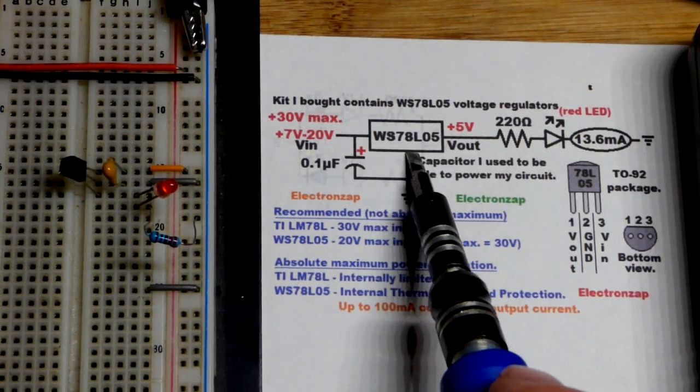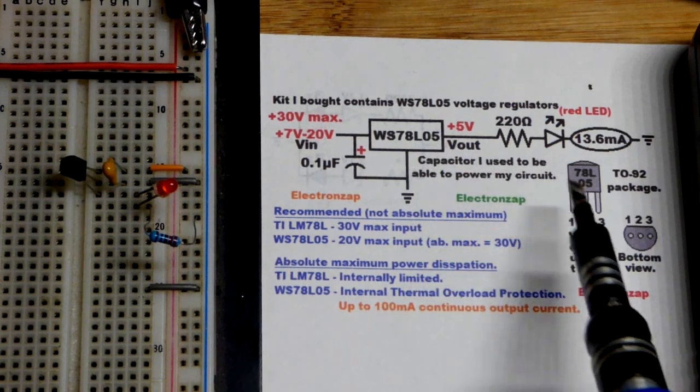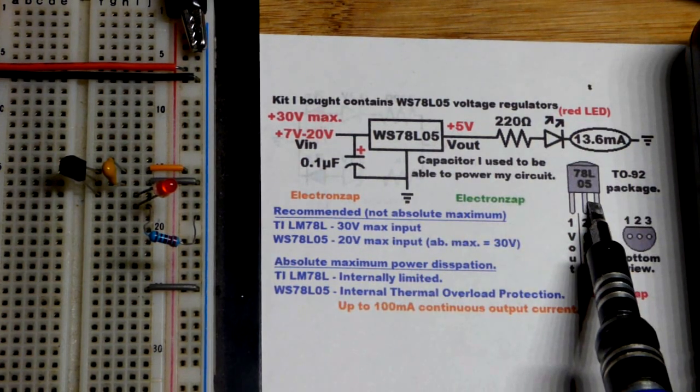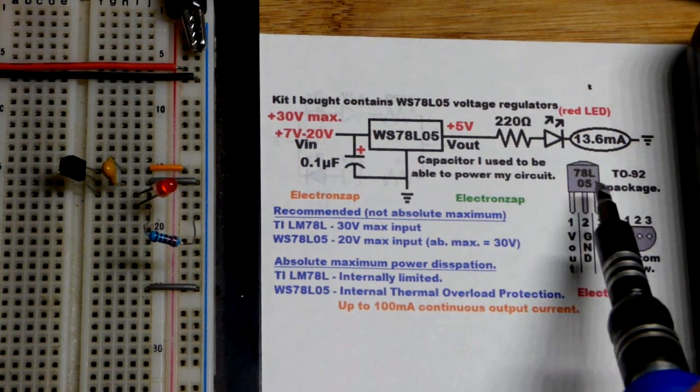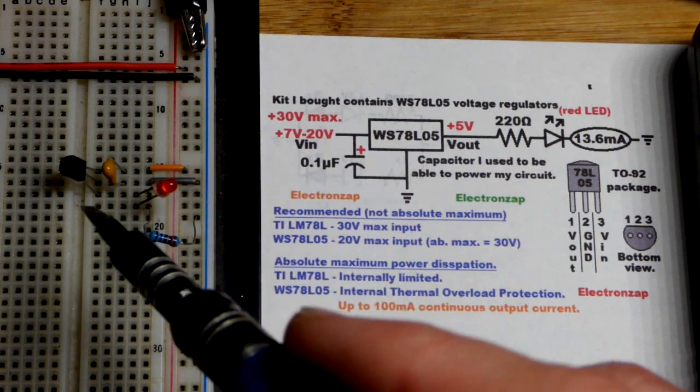So now in this video we're going to look at the 78L05. The one I have is the WS78L05, but in any case it's in a TO-92 package like a regular transistor 2N2222, 2N3904.